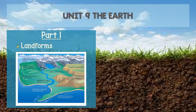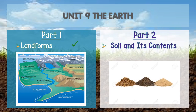We have covered Part 1, Landforms. In Part 1, you learned about the surface of the earth, such as mountain, beach, hill, valley, river, pond, lake and sea. Today, in Part 2, you are going to learn about Soil and Its Contents.